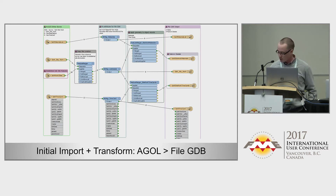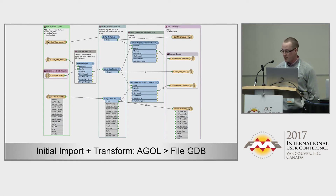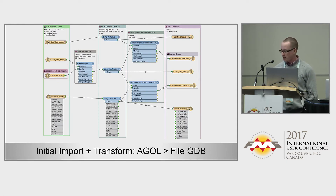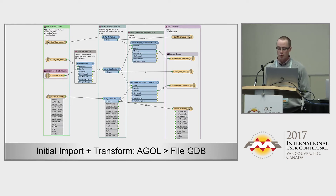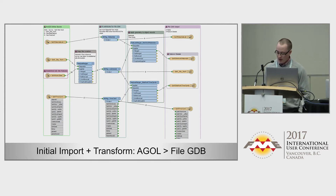The second workspace takes the base file geodatabase previously created and performs the final transformation so the data can be QC'd before implementation into the master repository. This workflow is broken down into three separate transformations: string formatting, date formatting, and cost/material generation.